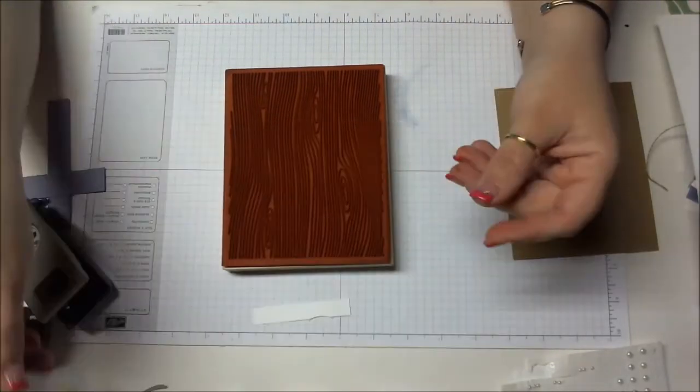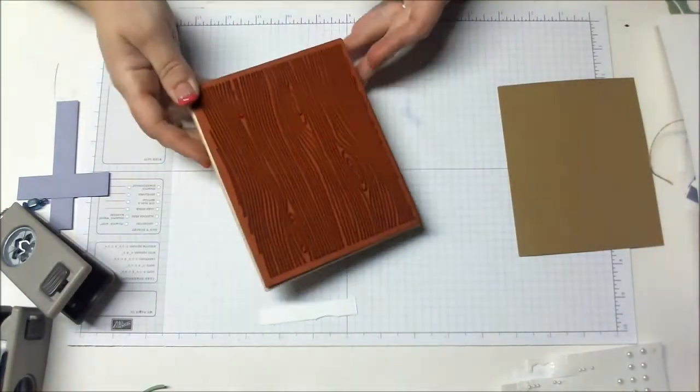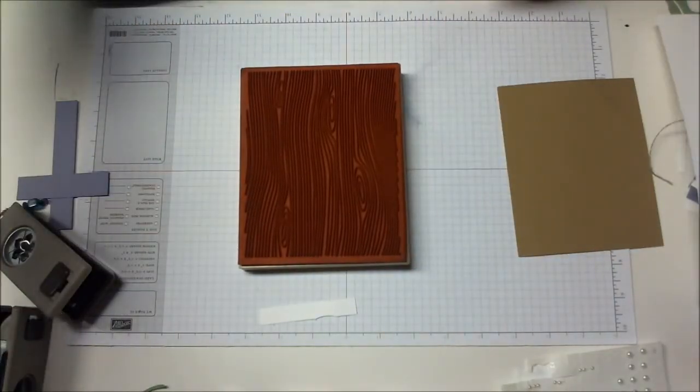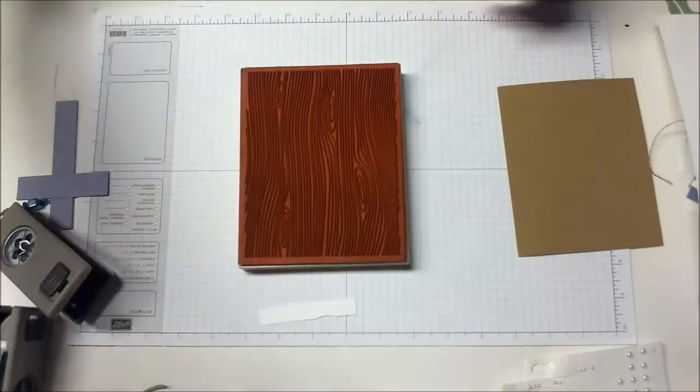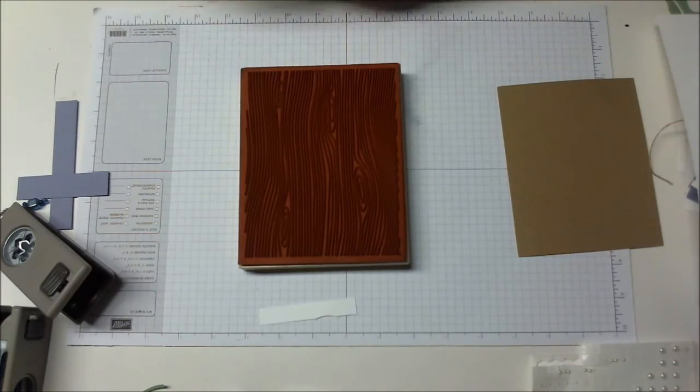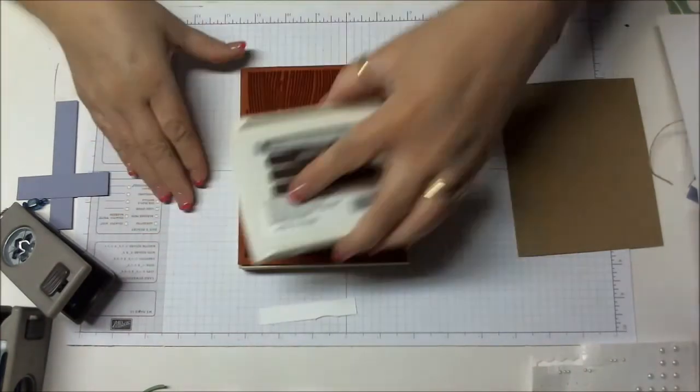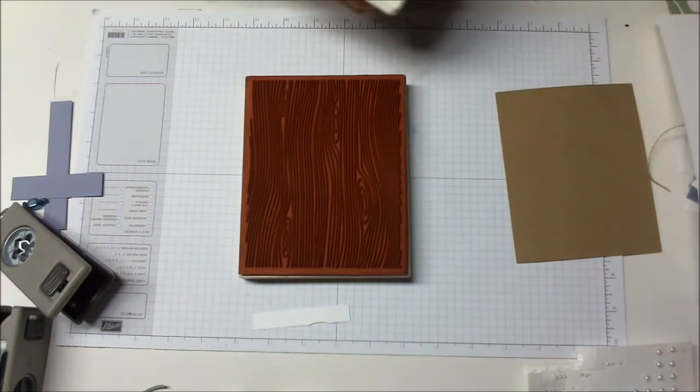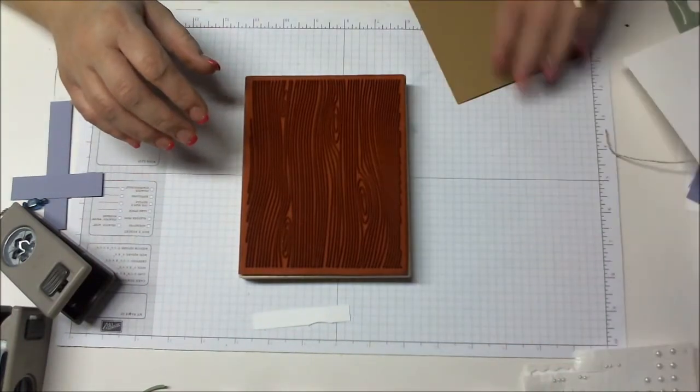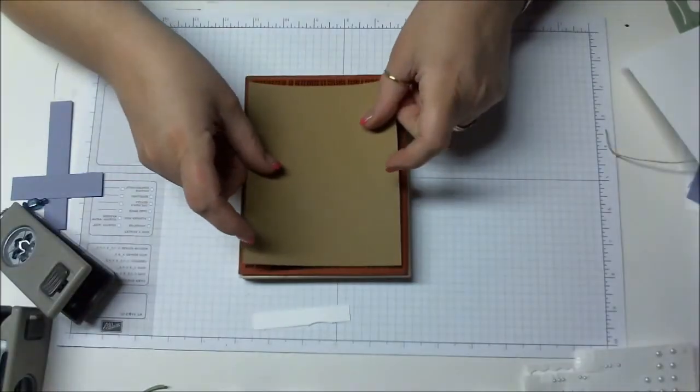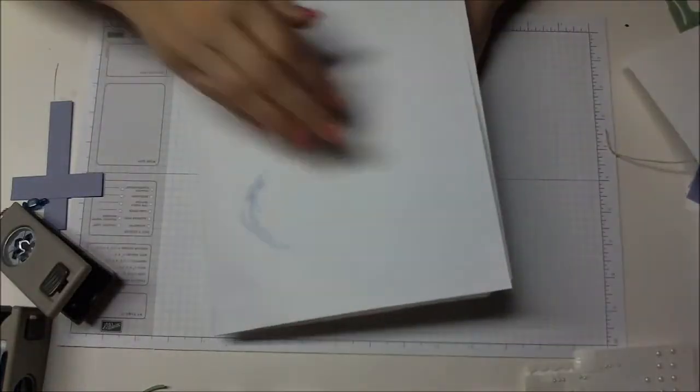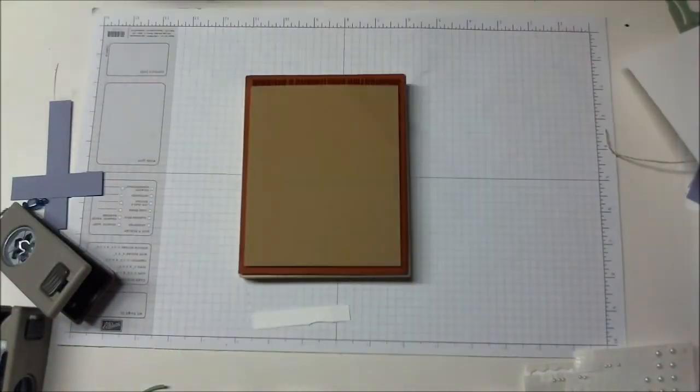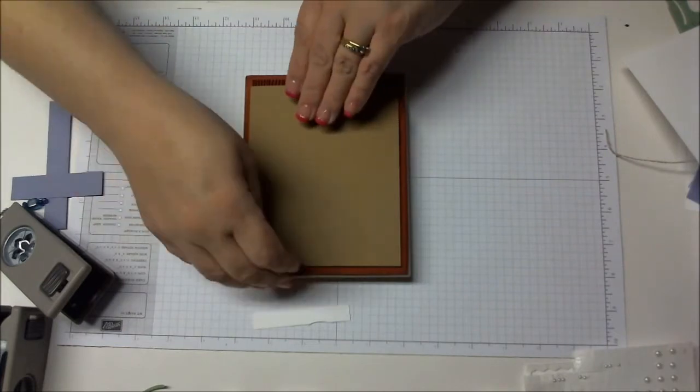Let's get started. I took the old wood grain stamp because there's a newer one in the Stampin' Up catalog. This is in the big catalog. I took Early Espresso ink and stamped up this wood grain really good. Then I took some Baked Brown Sugar cardstock, put it right on top, took a piece of scrap paper and gave it a good rub, then removed it.